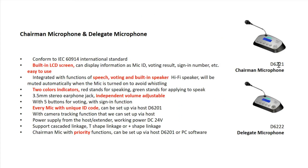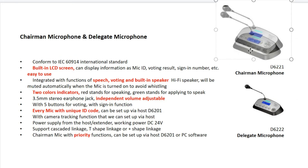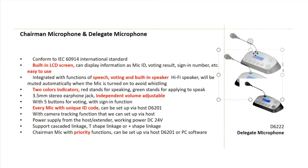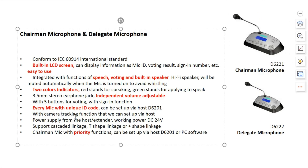The mic also has a built-in LCD screen and is very easy to use. It is integrated with functions of speech, voting, and building speaker. It has two color indicators: red stands for speaking, and green stands for applying to speak. Every mic has its own ID code. The chairman mic has the priority functions.